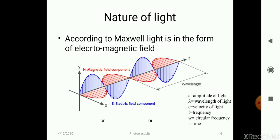Light usually travels in the form of electromagnetic waves. Here you can see a figure with electric field and magnetic field components which are perpendicular to each other.